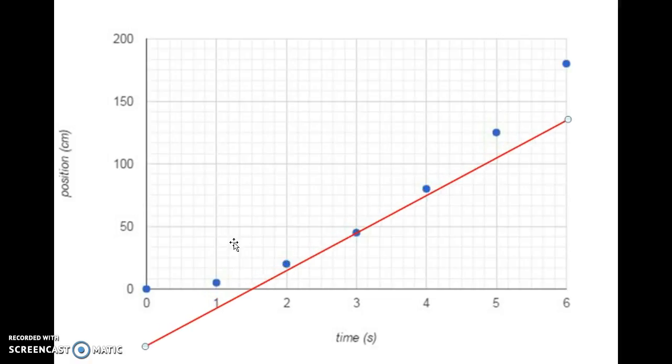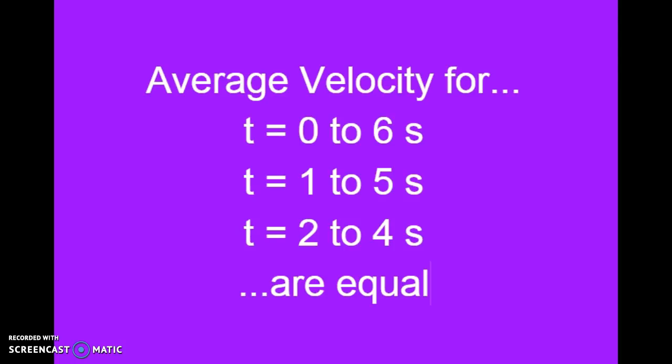And this would be a tangent line at time equals three seconds. The average velocity for time equals zero to six, one to five, and two to four seconds are all equal.